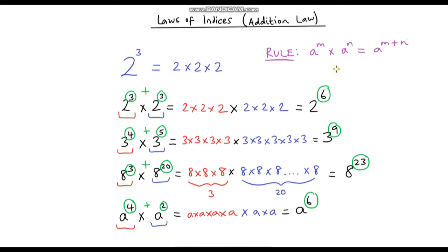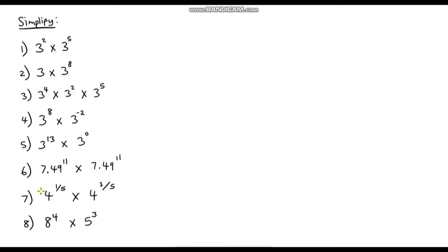In maths we always like to come up with rules for things we discover. I don't like to memorize rules — I like to understand how they come about. All this is saying is that if we multiply things with the same base, we simply add our indices together.